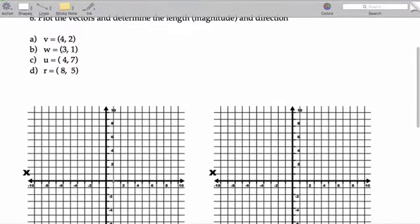So first, vector A, let's just go ahead and plot it. So 1, 2, 3, 4, up 1, 2, put the point right there, draw the arrow to the point.